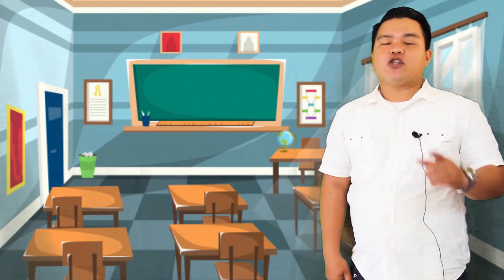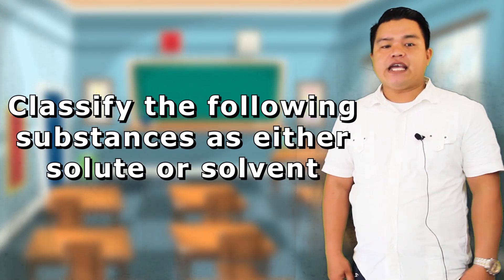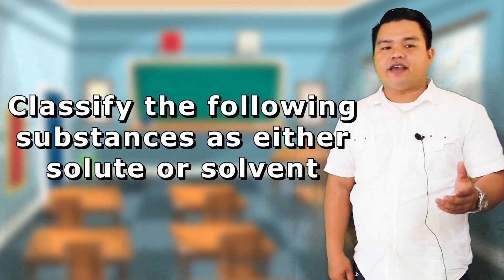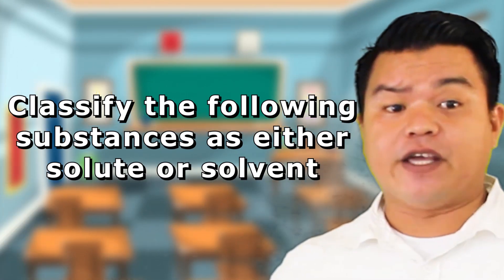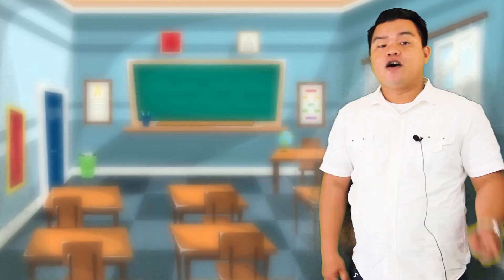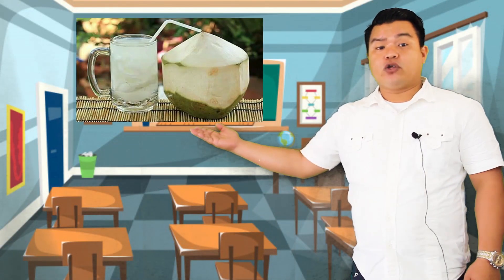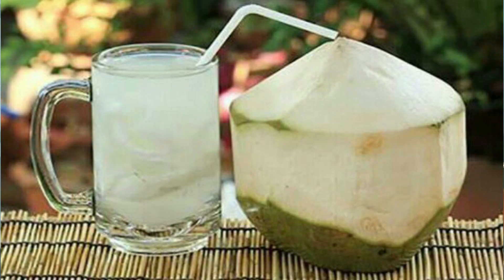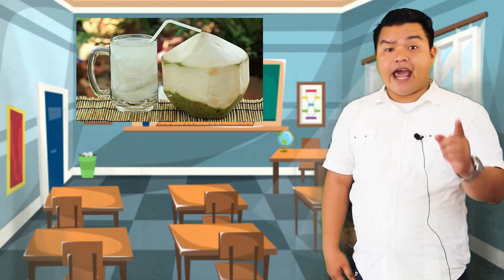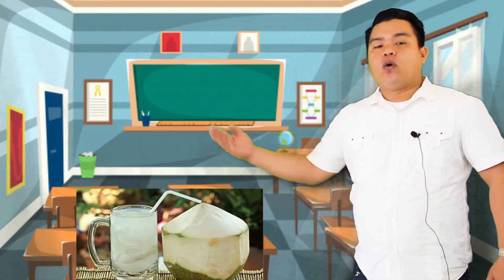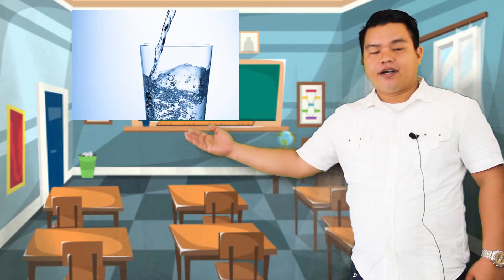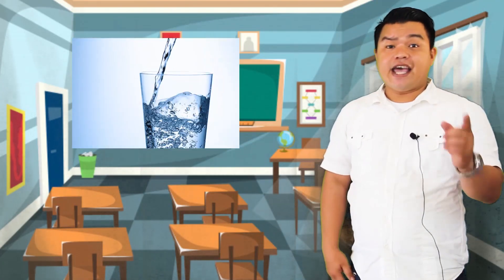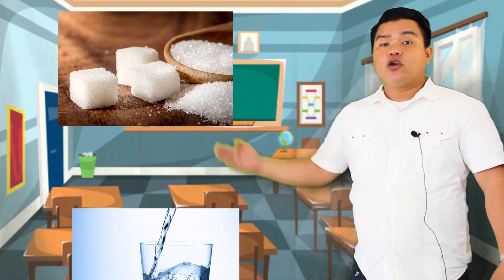Now kids, let's see how much you learned by classifying each substance as either solute or solvent. First, poke juice. Next, water. Then, sugar.